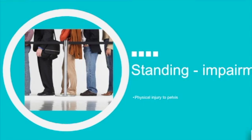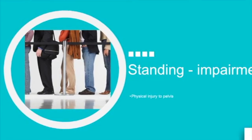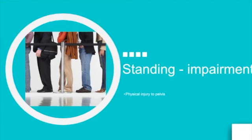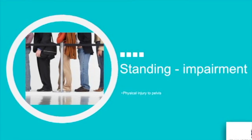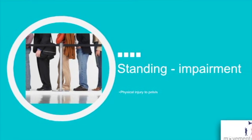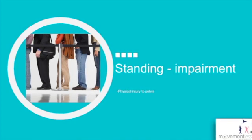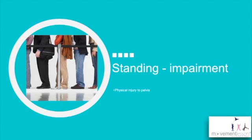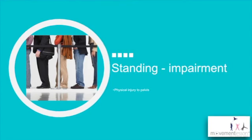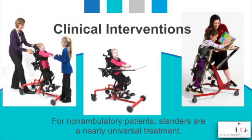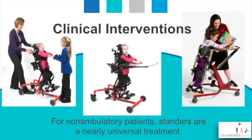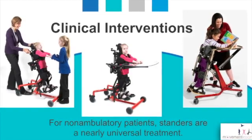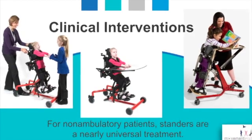What happens if you have a standing impairment, or how do you get one? You can have an injury to your pelvis, spine, foot, ankle, or knee, a neurological injury, or developmental injuries and delays — cerebral palsy, Down syndrome, autism, all movement disorders that impair standing. Right now these are all in children. So for a child that's non-ambulatory, we know that standing is important, and we'll talk about why in just a minute.